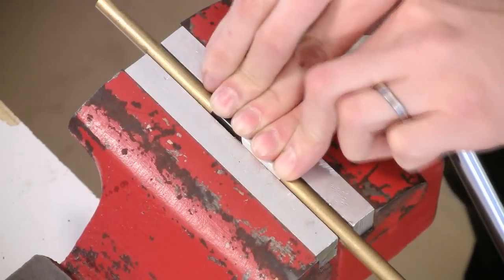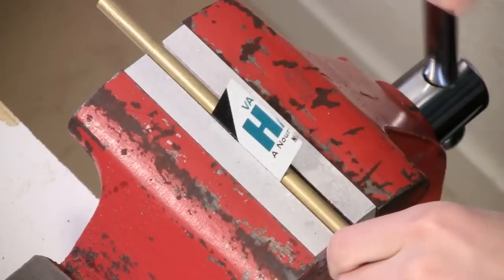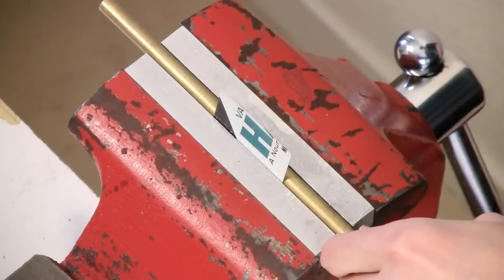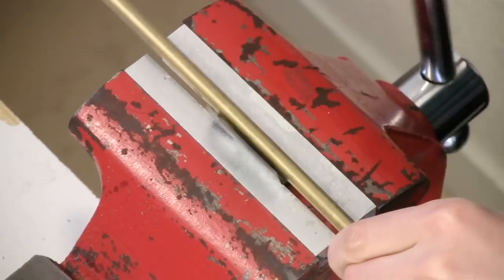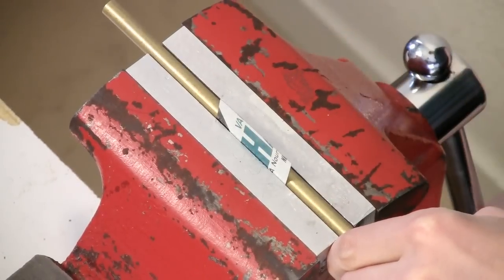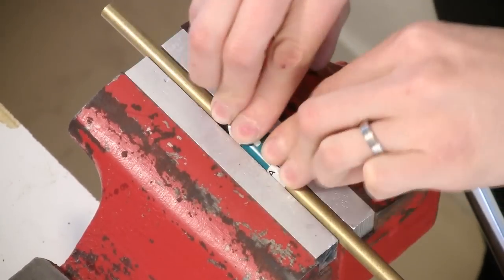You can also grip the metal in your vise with a dowel sandwiched between it and the vise jaws. Then, bend the metal around as far as you can, reposition the work and the dowel in the vise, and continue until the curve or cylinder is complete.